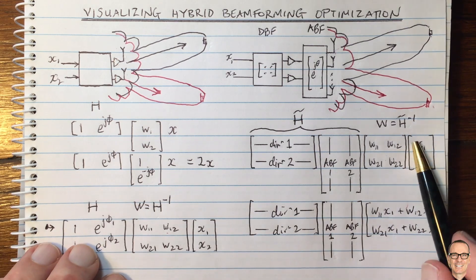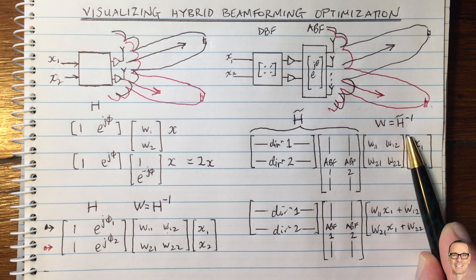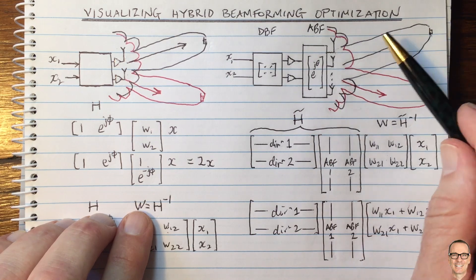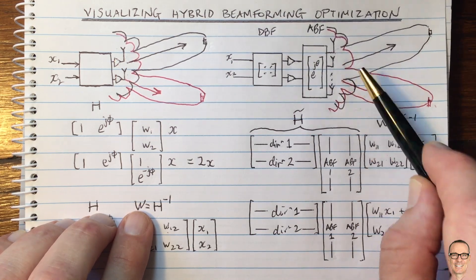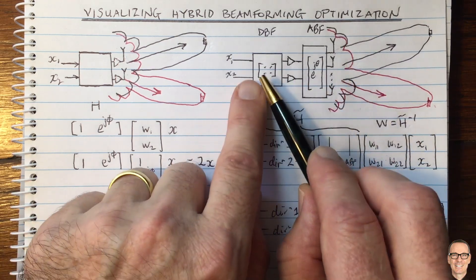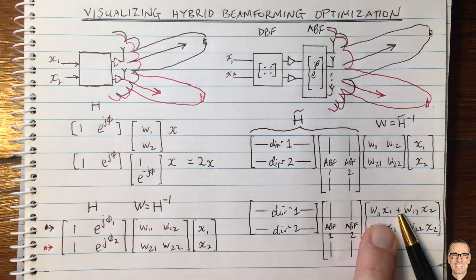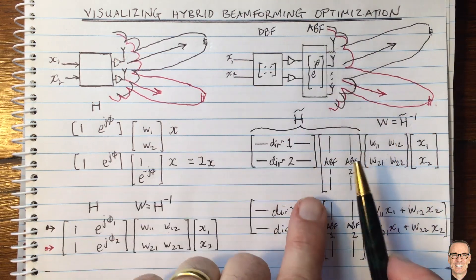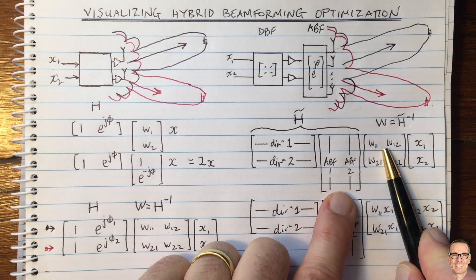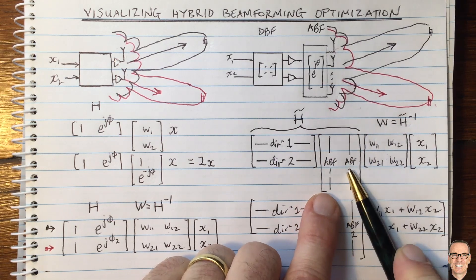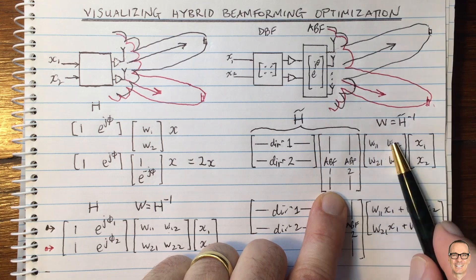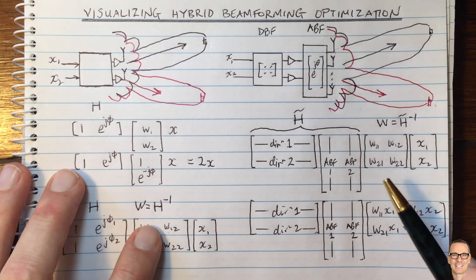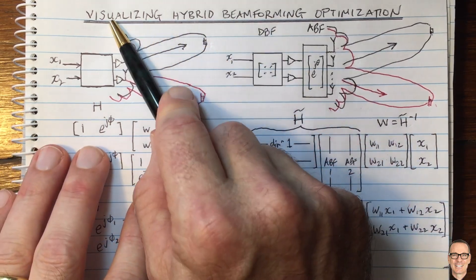The digital beamforming is effectively doing digital beams within the analog beams. The analog beams give you beams with residual interference, and you can precompensate for that residual interference in the digital beamformer. For an overall optimal result, you really need to optimize both matrices together with the unit magnitude constraint for the analog matrix — not just choosing standard beamforming and then zero forcing as shown here as one example.